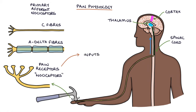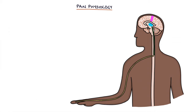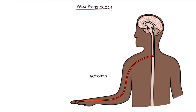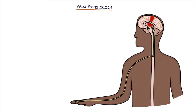The main sensory inputs that generate a pain signal are mechanical, for example pressure; heat; and chemical, for example prostaglandins. However, it's actually more complicated. When directly measuring activity in the peripheral afferent sensory nerves, pain can be experienced without any activity in the primary afferent nociceptors. Equally, activity in the primary afferent nociceptors can be detected without the patient experiencing any pain. Essentially, patients can experience pain without any clear nervous signal that should cause pain, and equally, patients with a nervous signal that should cause pain may not experience any pain.